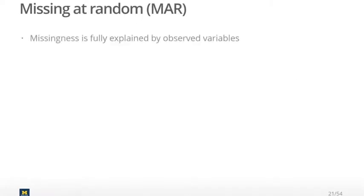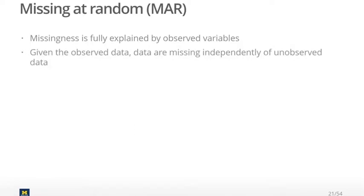Missing at random is where the missingness is fully explained by the observed variables. I don't think of this as truly 'missing at random' — I think of it as missingness that's explained by the variables in your data set. Given the observed data, data are missing independently of unobserved data. In other words, the missingness has nothing to do with variables not in your data set, and entirely to do with variables that are in your data set.